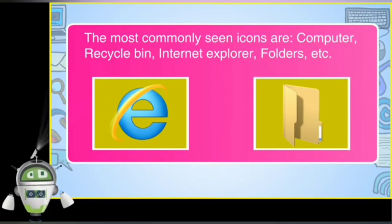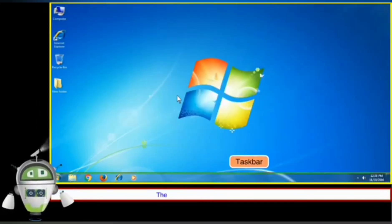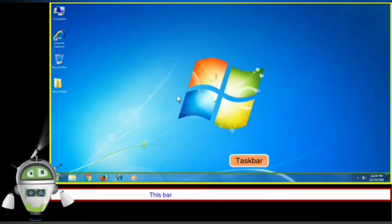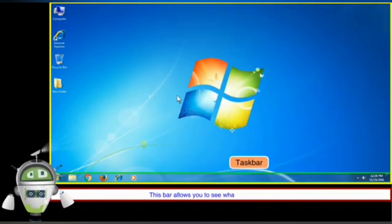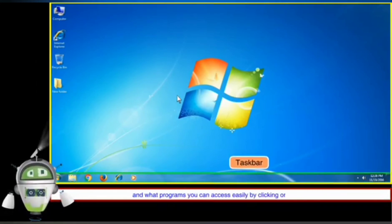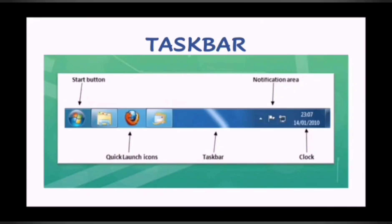Our next topic is the Taskbar. The taskbar is located at the bottom of the desktop and is one long bar. It contains the Start button, currently open programs, the Show Desktop button, and the clock. Let us discuss each one now.